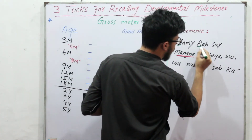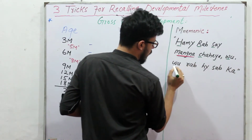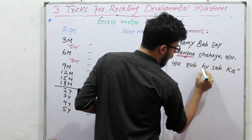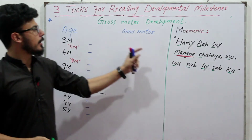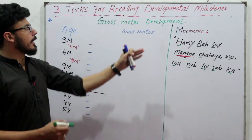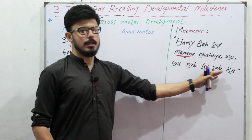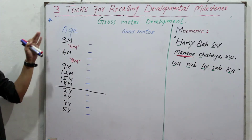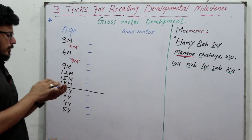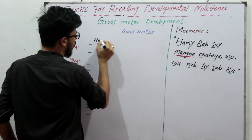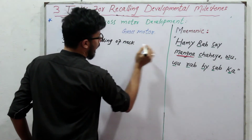So using these initial letters to recall all gross motor activities in a glance, at the age of three months, H stands for holding of neck. So if a baby is normal, the baby would hold the neck at three months.